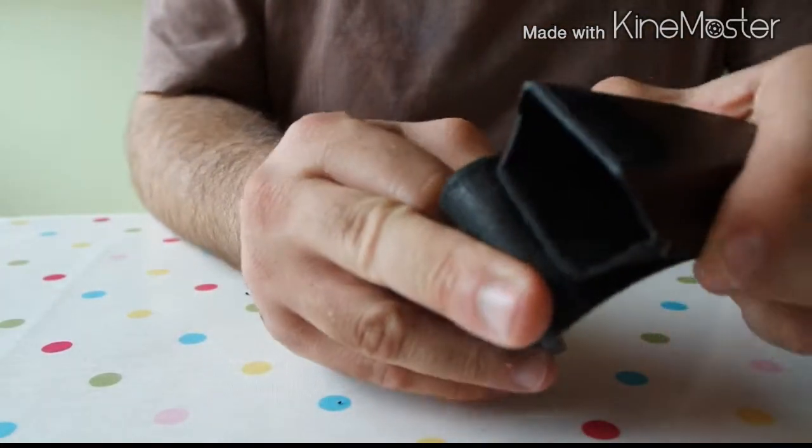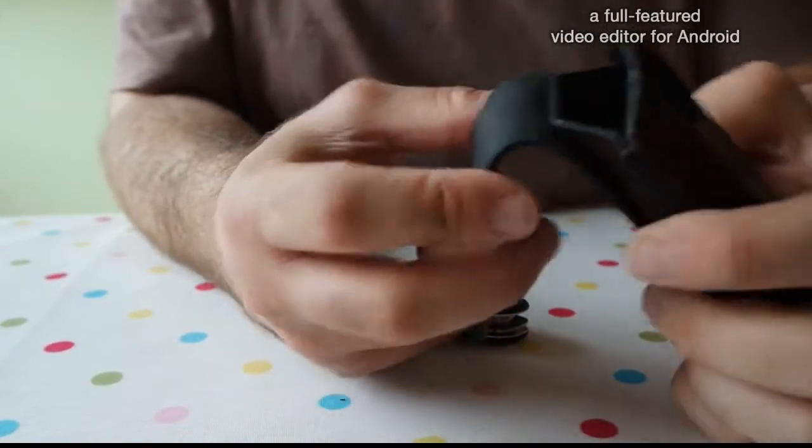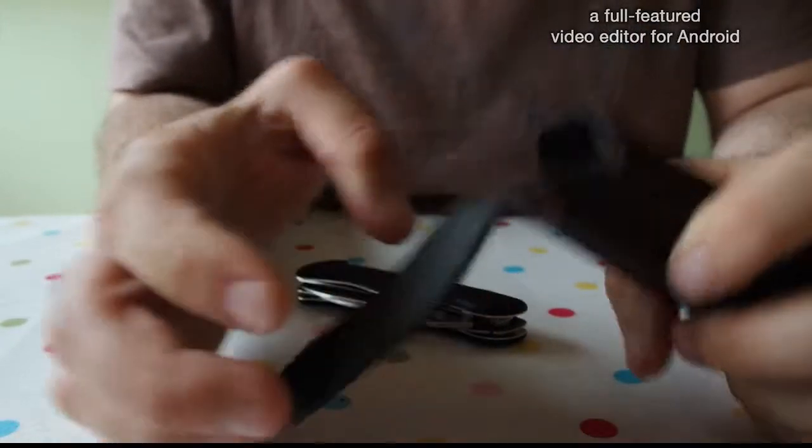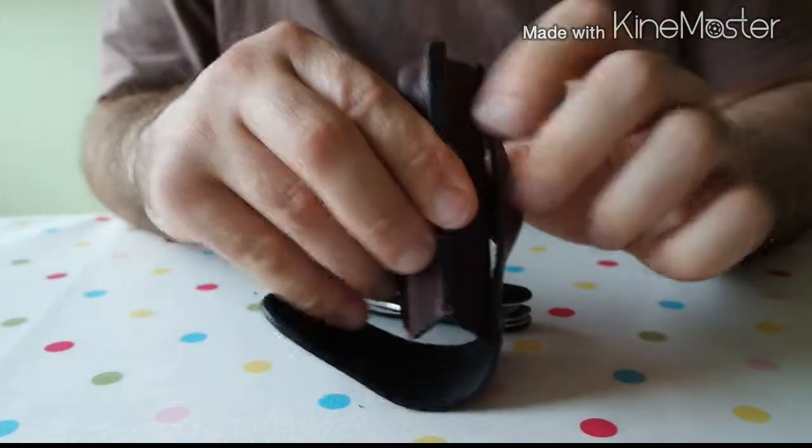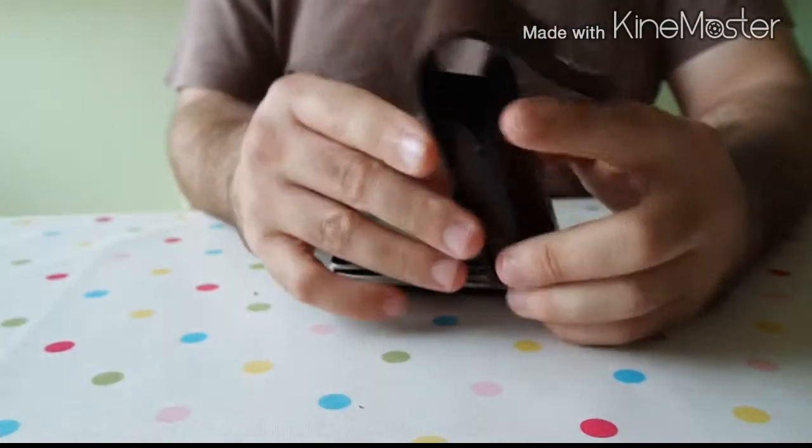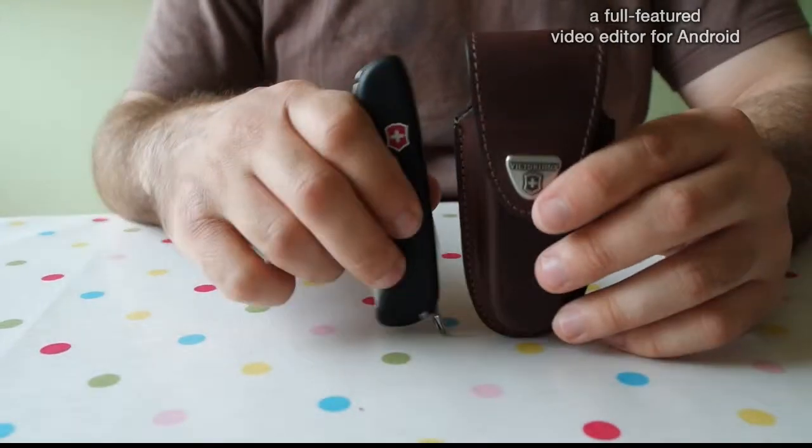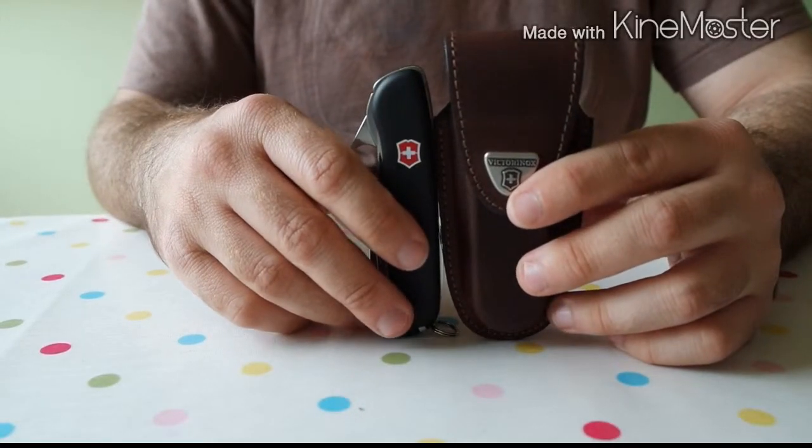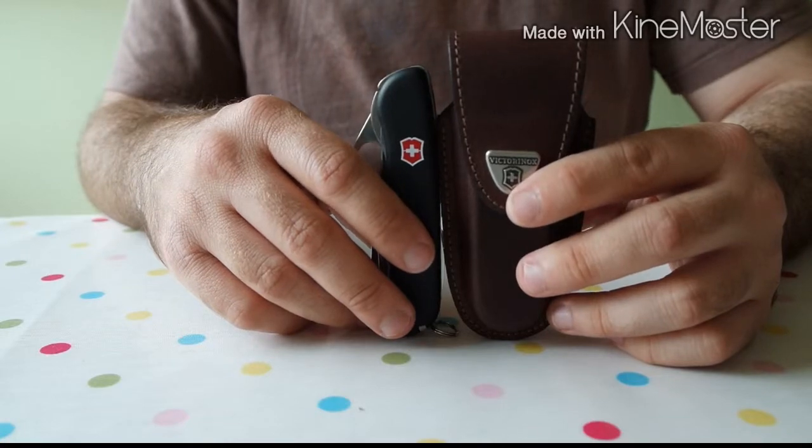There you go, it's nice and soft, it's not going to damage the knife or scratch it up in any way. Belt loop on the back which is of a decent size. I was worried I was going to buy one that was a bit too small, but it works perfectly.